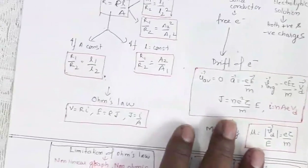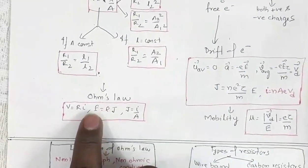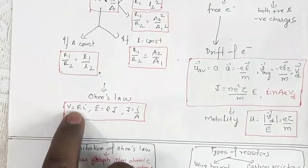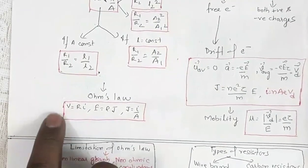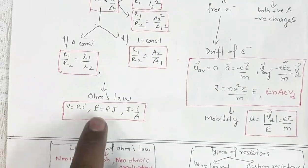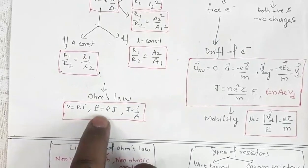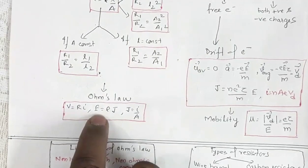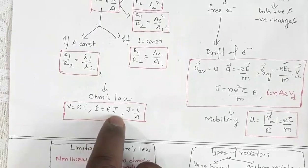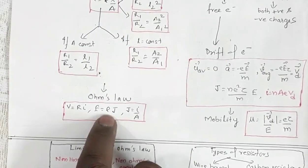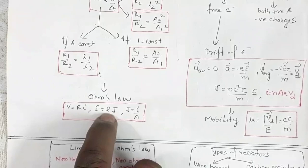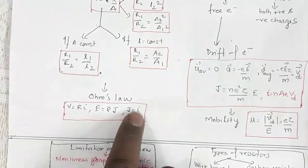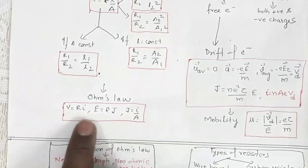Ohm's law in normal form: V is proportional to I, so V = RI at constant physical conditions — temperature should be constant. This is one form of Ohm's law. Another form: electric field intensity E is proportional to current density j, where ρ (resistivity) is the proportionality constant. Current density j = I/A. You need to understand both forms of Ohm's law.